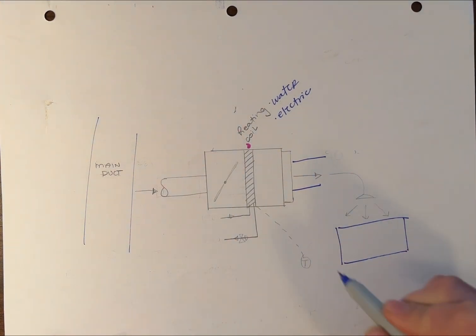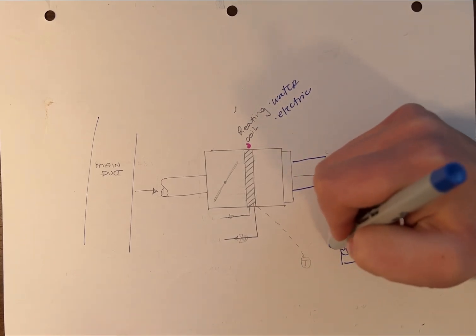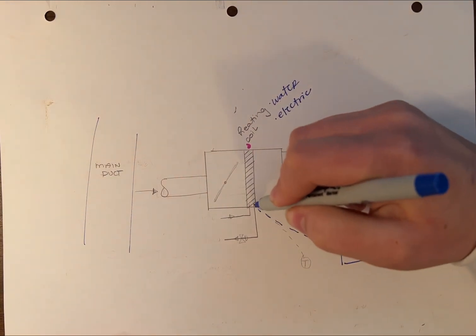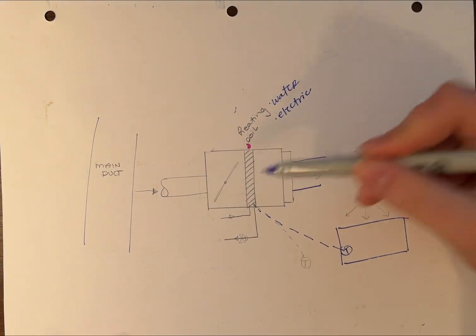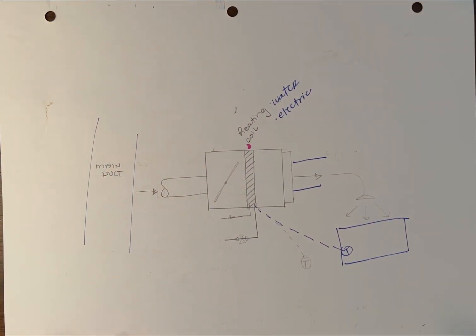Inside that space, you will have a thermostat. That thermostat controls your heating coil and modulating damper, depending on how your controls are set up.